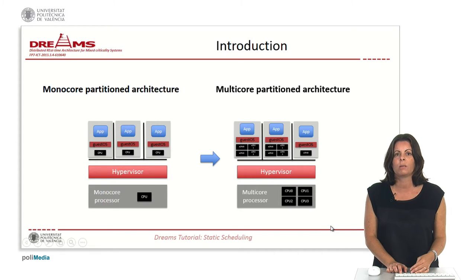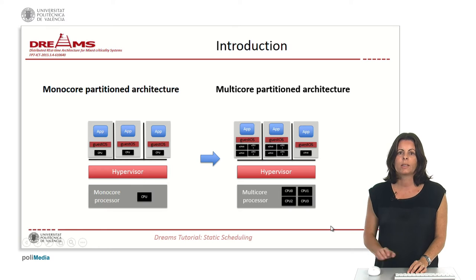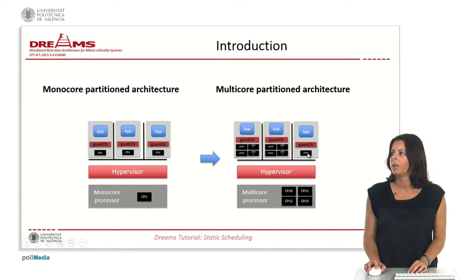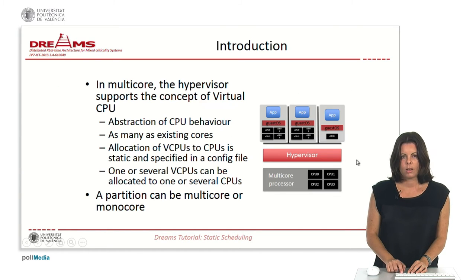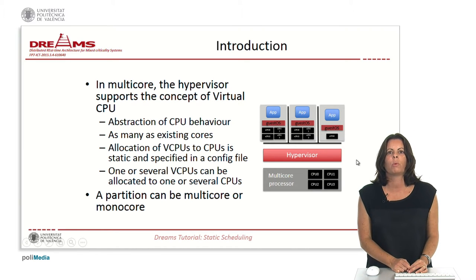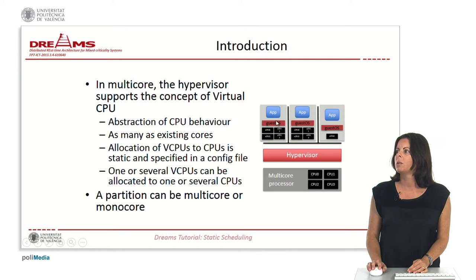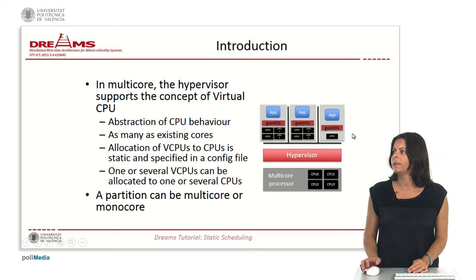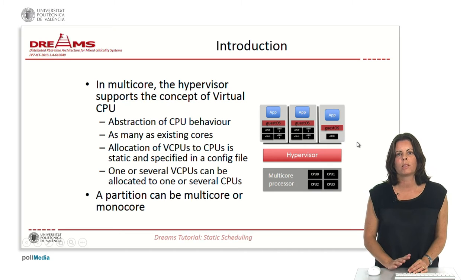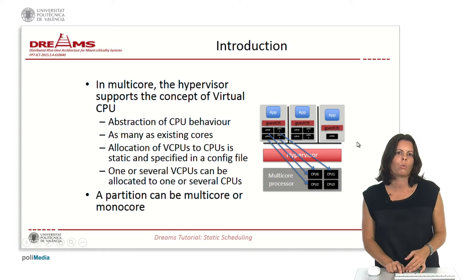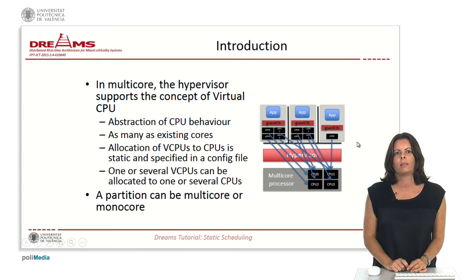When we move to a multicore architecture, we have a similar architecture composed of the three layers, but we have more than one CPU. In this case we can have an operating system that is multicore or monocore depending on whether the partition has been assigned one CPU or more than one CPU. The hypervisor manages the multicore system with the concept of the virtual CPU, which is an abstraction of the real CPU, and we can have as many virtual CPUs as real existing cores. The allocation from the virtual CPUs to the real CPUs can be one-to-one, several-to-one, or one-to-several. This allocation must be done statically, meaning it will be specified in a configuration file of the hypervisor.